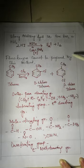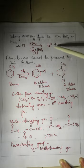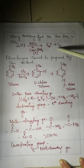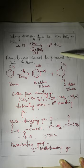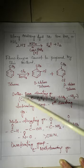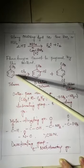Fluorobenzene cannot be prepared by this direct halogenation method, because fluorine is very explosive and reactive. Toluene reacts with Cl2 in the presence of FeCl3 to give ortho-chlorotoluene and para-chlorotoluene.